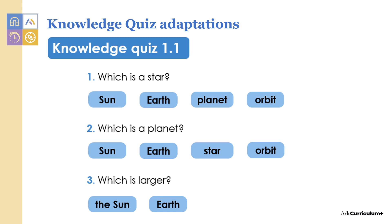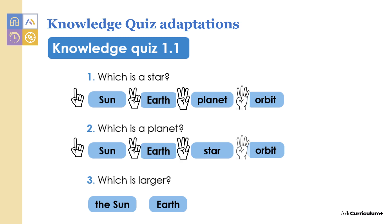Another option is to start the year with pupils answering the questions as a class by showing a number on their hands. To keep track of answers, you keep a record of the general consensus the class has come to, or even make a note in the workbook you've kept aside as a teacher copy. As the year progresses you may wish to make these knowledge quizzes more independent.